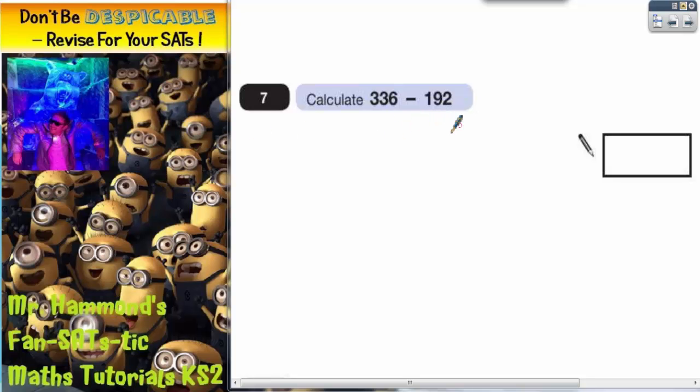If you get one of these questions, which you probably will, you should be thinking you've hit the jackpot because it's just column methods. Now you'll notice straight away that they are not going to make it that easy for you. They haven't set it up in a column method. They've written the numbers side by side.